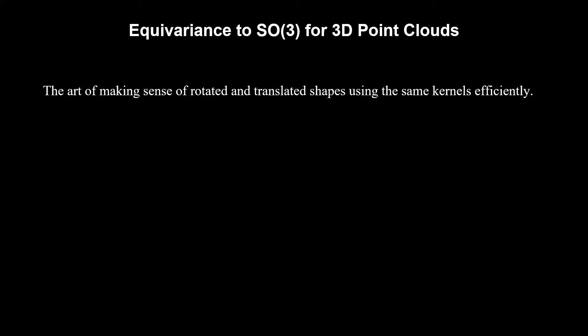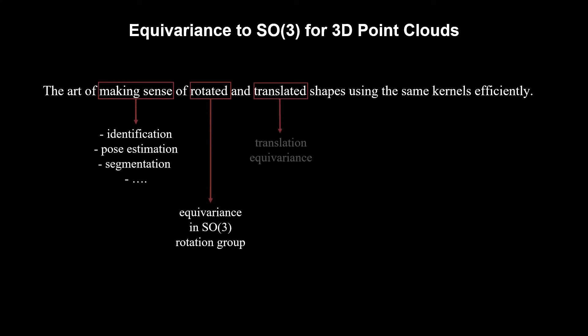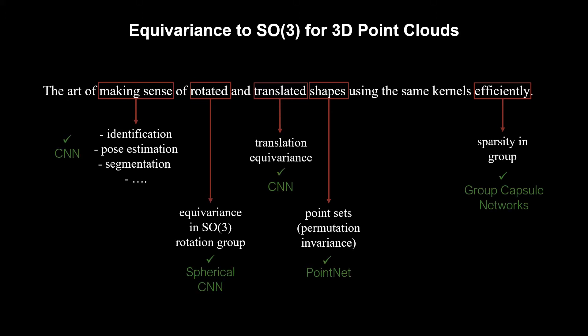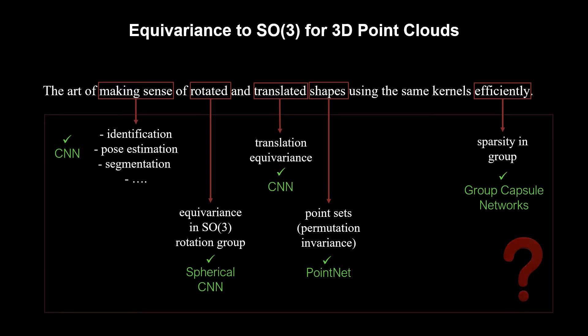Essentially, we are trying to perceive shapes under transformations efficiently. This translates to making sense of rotated and translated point clouds by efficiently recycling the kernel weights. Note that different parts of this involved sentence translate to various technical advancements and are covered individually by different technologies. However, to the best of our knowledge, none of the existing works have all the properties mentioned here.